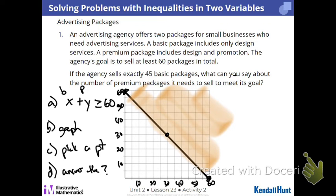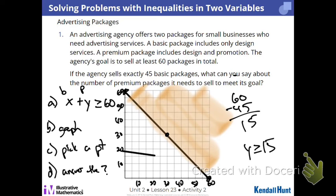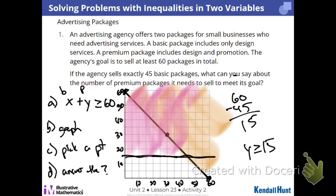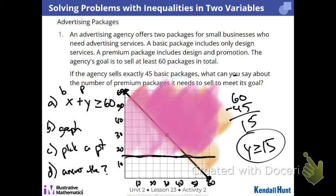Now we're going to answer the question. The question says 45 basic packages — that would require that we sell how many premiums? 15. So premiums Y needs to be greater than or equal to 15. Check this line out — if right here is 15, we can sell greater than or equal to that. That would be everything above this line. But this region through here is where both would be true — anything in that region satisfies both: more than 15 premium packages, and a combination of 60 or more total.